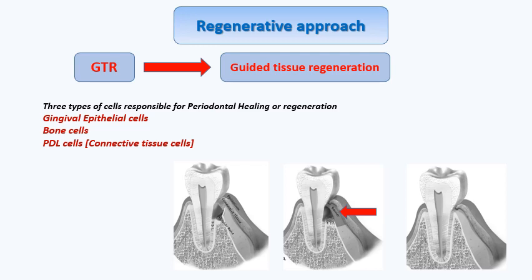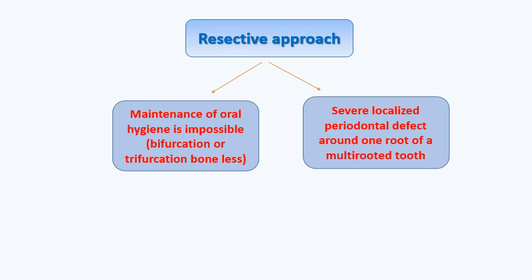After performing curettage, there is a wound with a blood clot. The membrane is placed over it. First, the membrane stabilizes the blood clot and the cells inside begin rearrangement. Second, it hinders gingival epithelial cells from repopulating the root surface, blocking them so the root surface remains available for the slower periodontal ligament and bone cells.